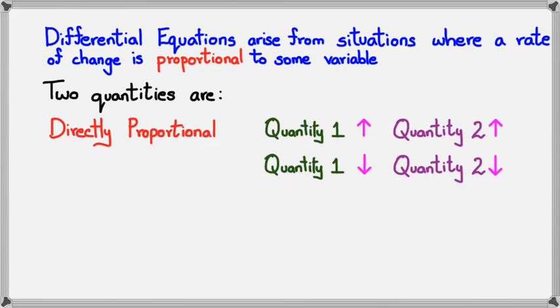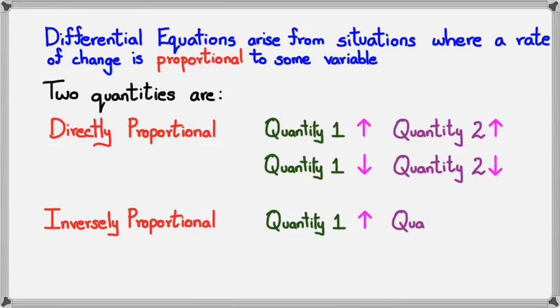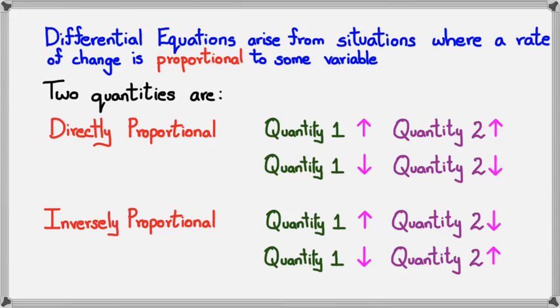Now, the other one is called inversely proportional. Alright? And with inversely proportional is that if you have quantity 1, and if quantity 1 increases, then if it's inversely proportional, then quantity 2 decreases. And likewise, if quantity 1 decreases, then quantity 2 will increase. So, this is the generic idea of directly proportional and inversely proportional. Alright, looking at these types of questions, just generalizing this with differential equations, I'll be looking at it at the next slide.